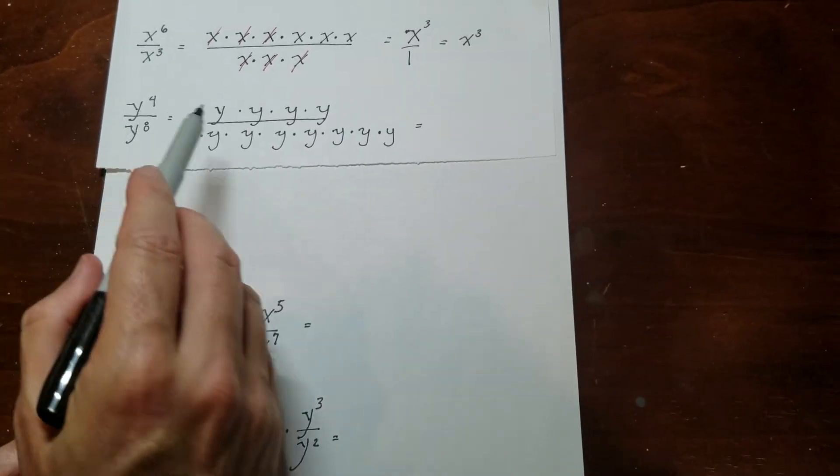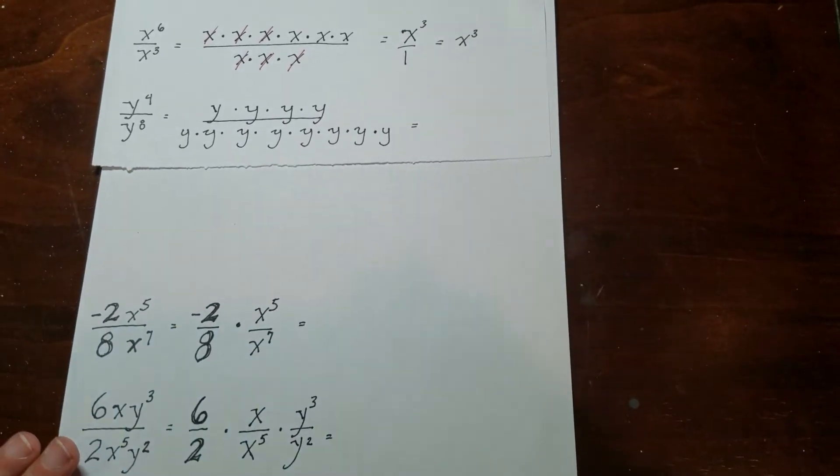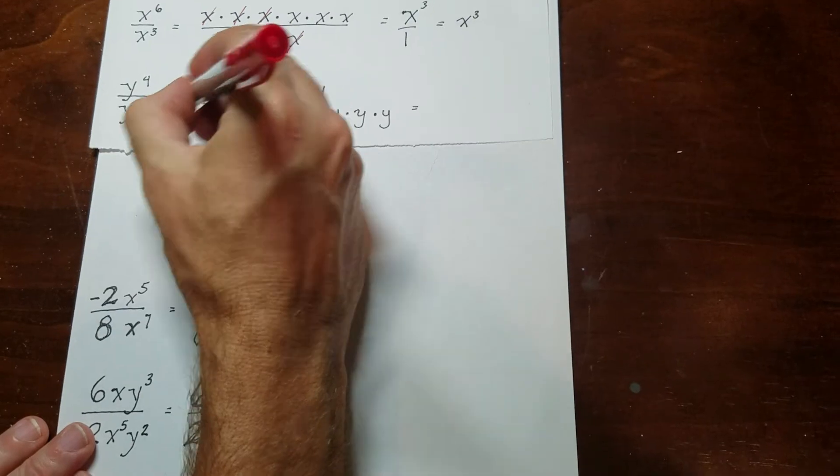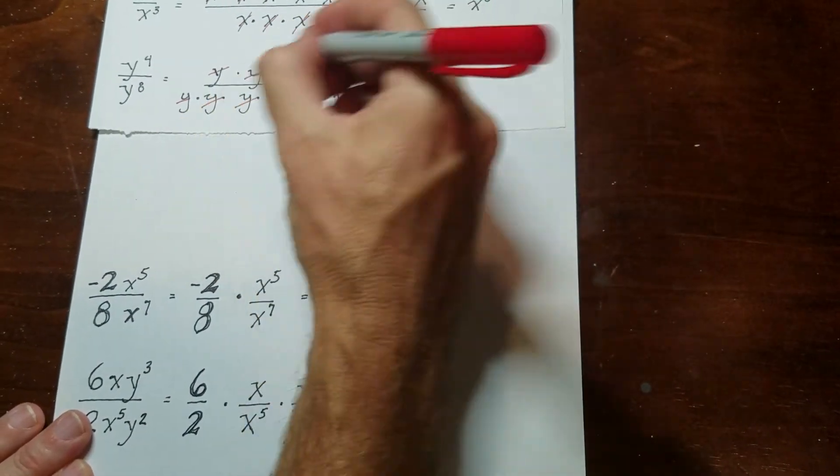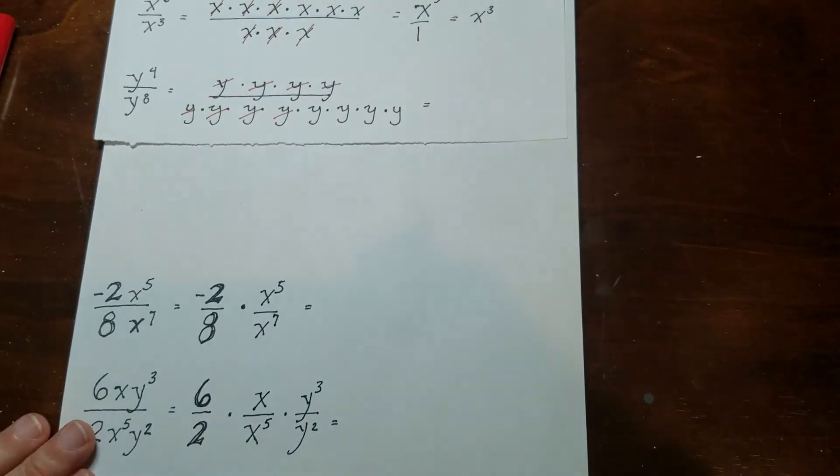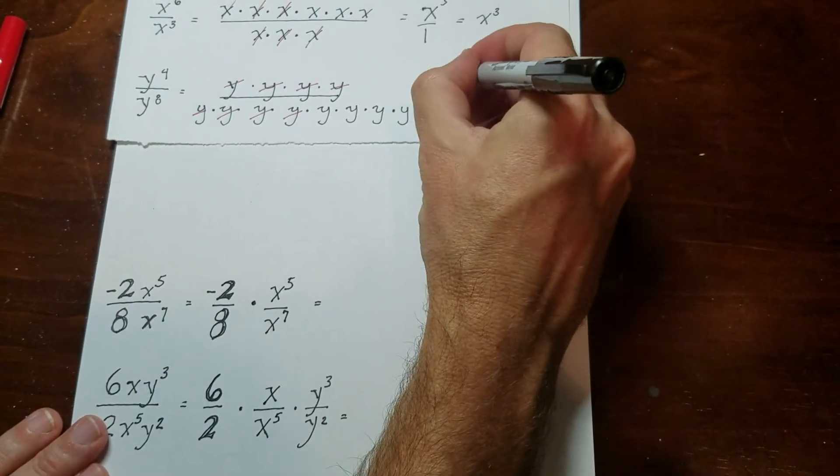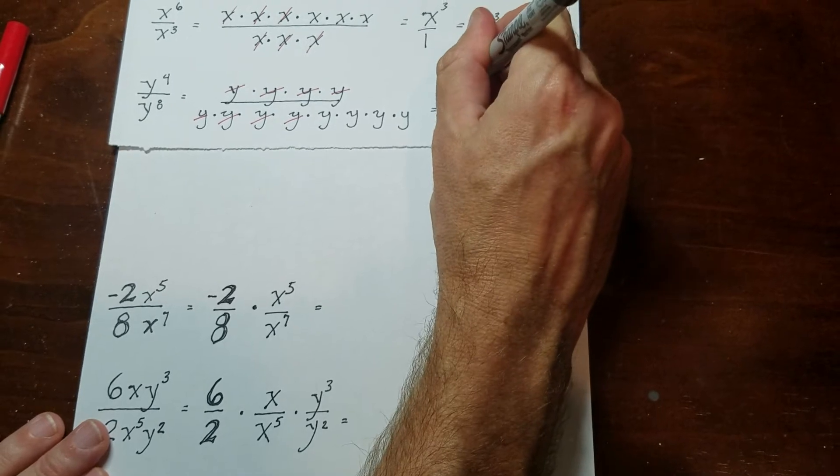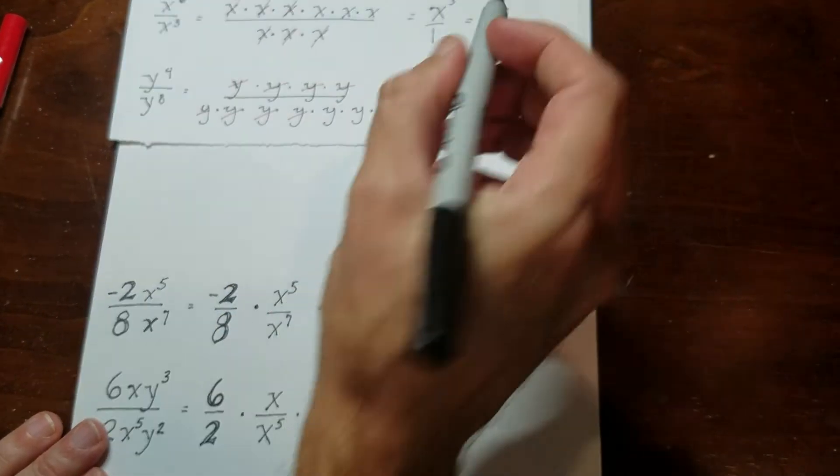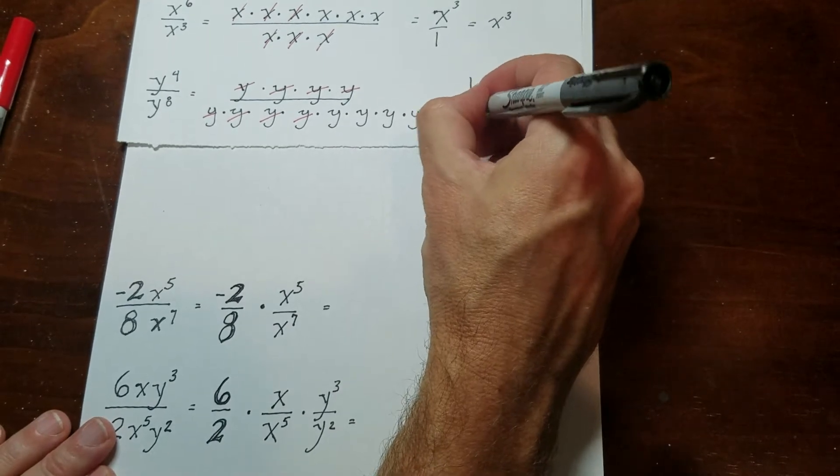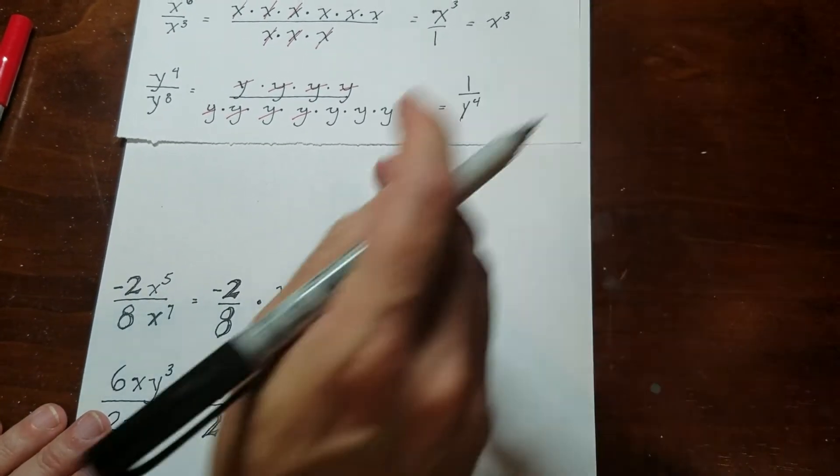This one right here. So I rewrote it the same way, I have x to the 4th power. So what I'm going to do is I'm going to cancel out all of the 1s. Here and here, here and here. And then, like I just said, there's nothing left on the top, so I'm going to put a 1. And then down here, there's 1, 2, 3, 4. So that's the answer.